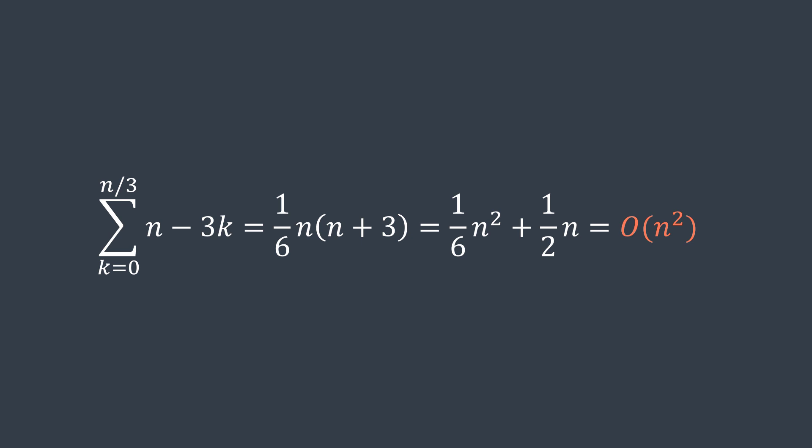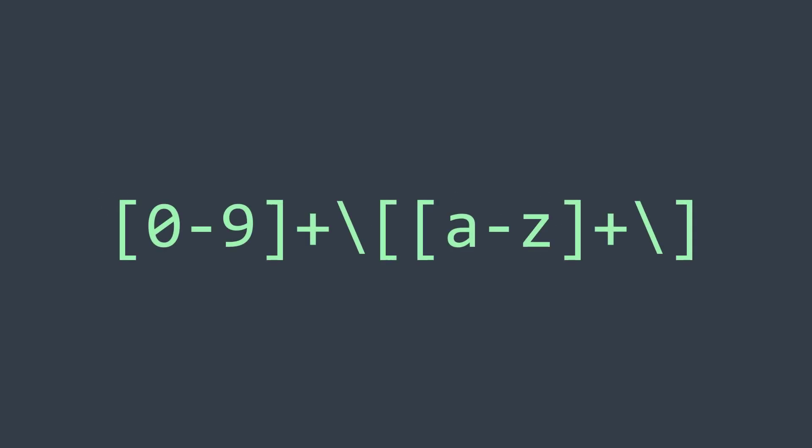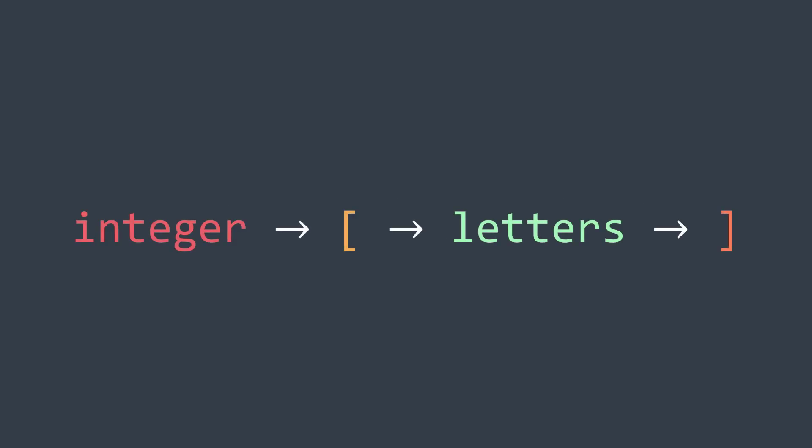The second solution is to use regular expressions. The idea is that while we still have encoded strings, we search for substrings of the form: one or more digits, then an opening bracket, then alphabetical letters, then a closing bracket — and replace them by the integer multiplied by the string between brackets.